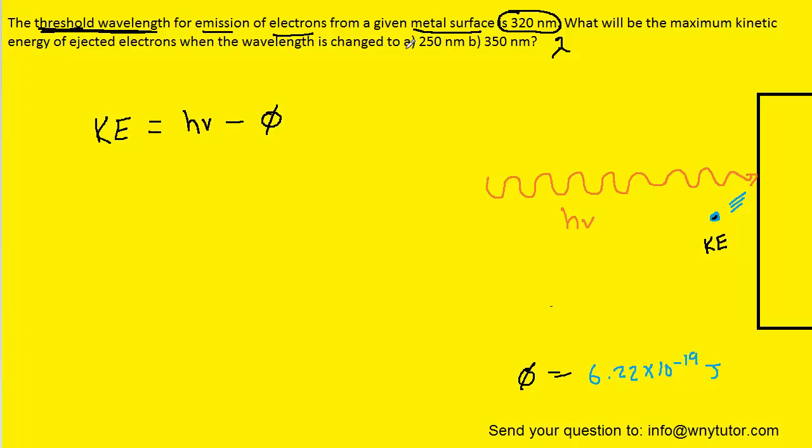So we can now turn to part A, which is asking us to determine the maximum kinetic energy. We can actually use this equation once again. The kinetic energy is going to equal the energy of the light, which is h times the frequency. Remember that we can substitute in the speed of light divided by wavelength for the frequency, and then we'll be subtracting the so-called work function.